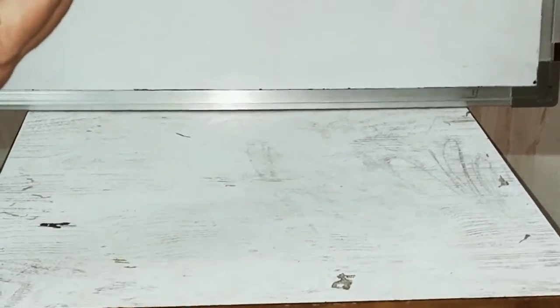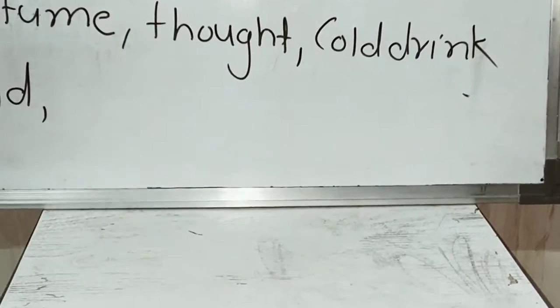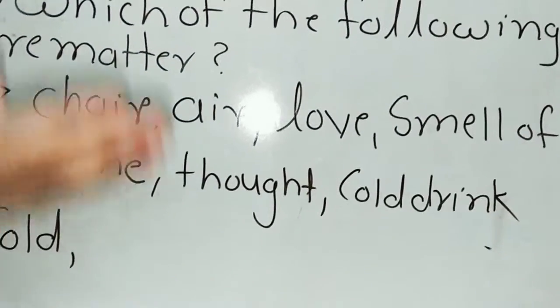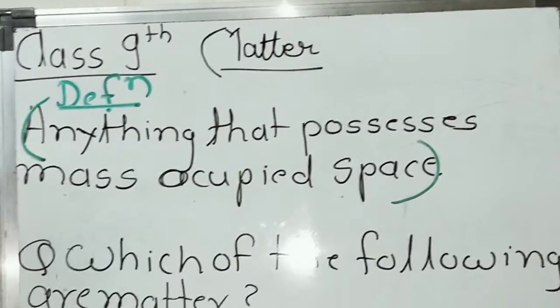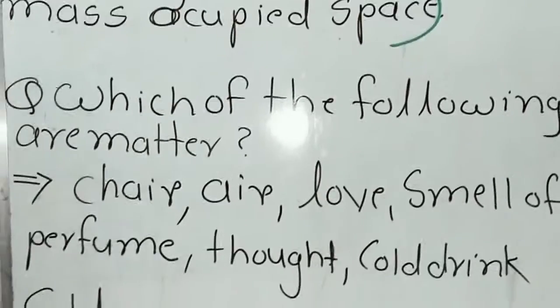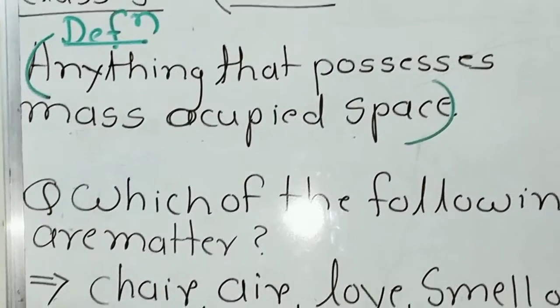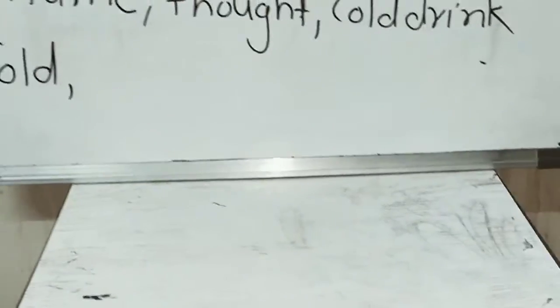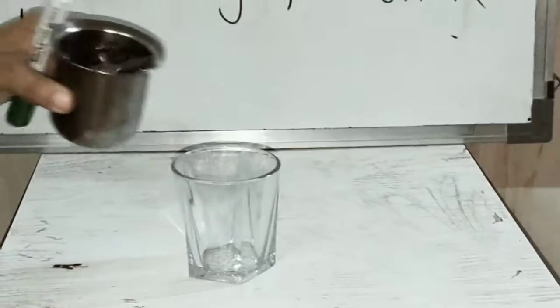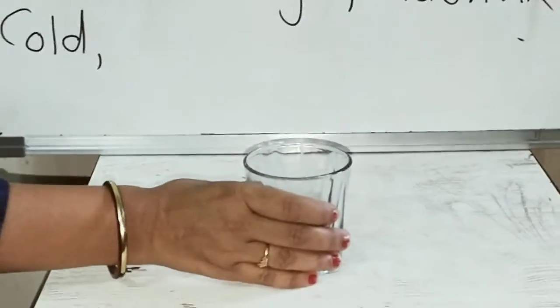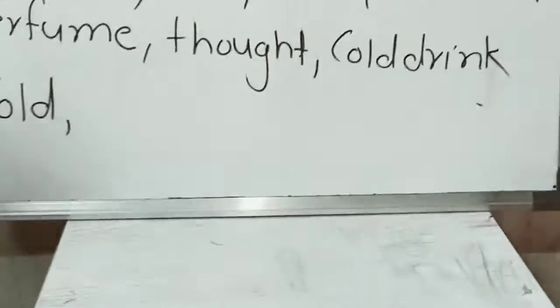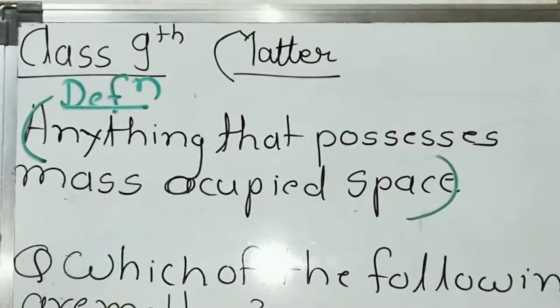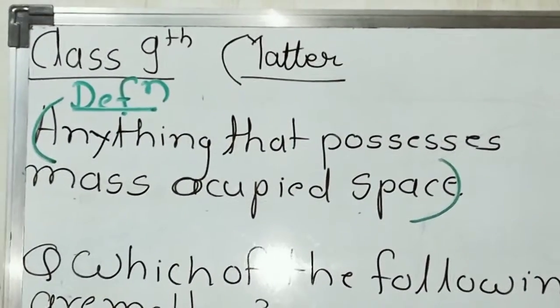A balloon with air — just a balloon with air. You know there is a difference in their mass because of the air. That means air is also an example of matter. A piece of clock — any piece of the clock is also an example of matter, as it has some mass and occupies some space. Water also has some mass and occupies some space, so it is also an example of matter.